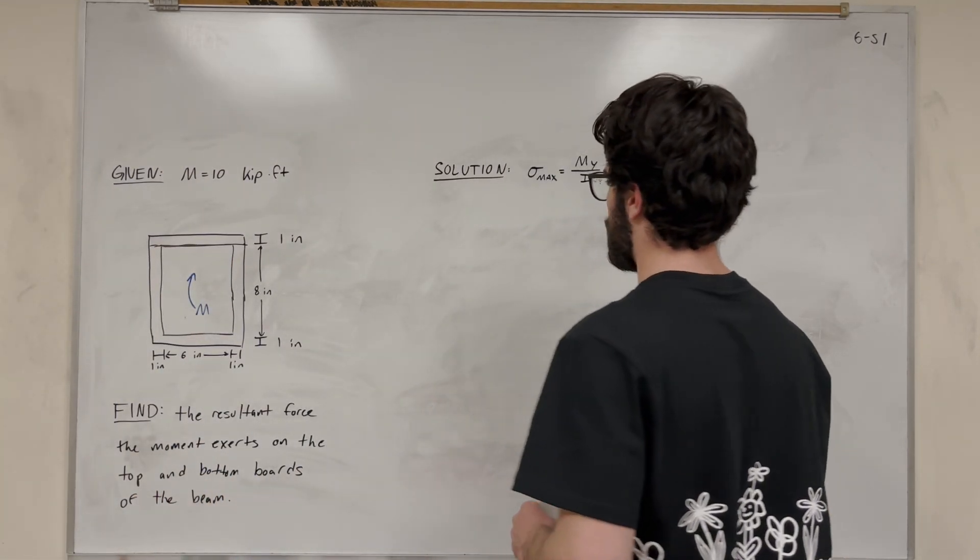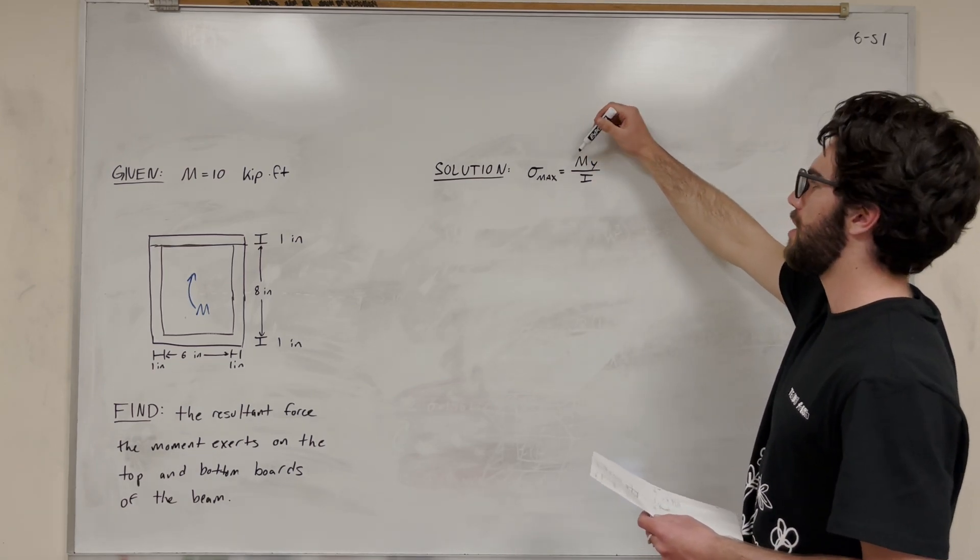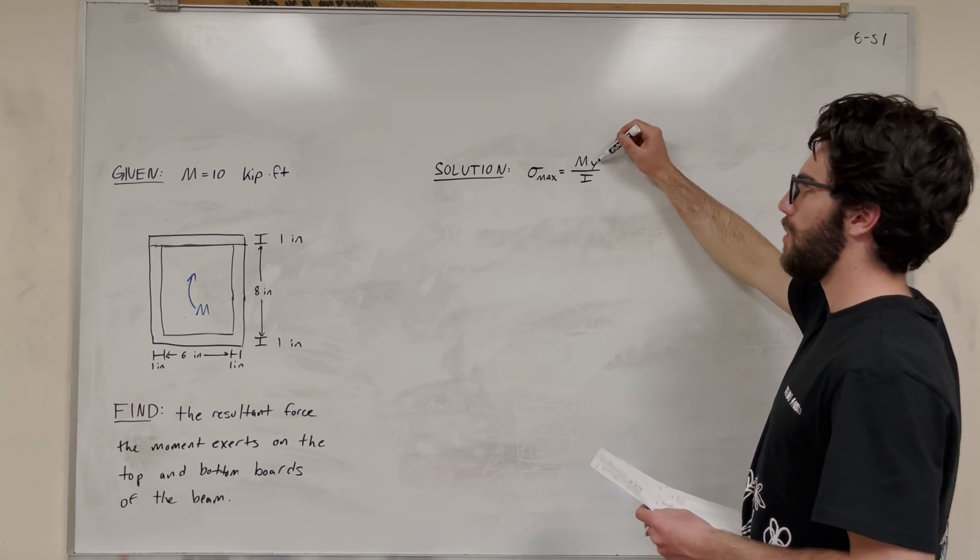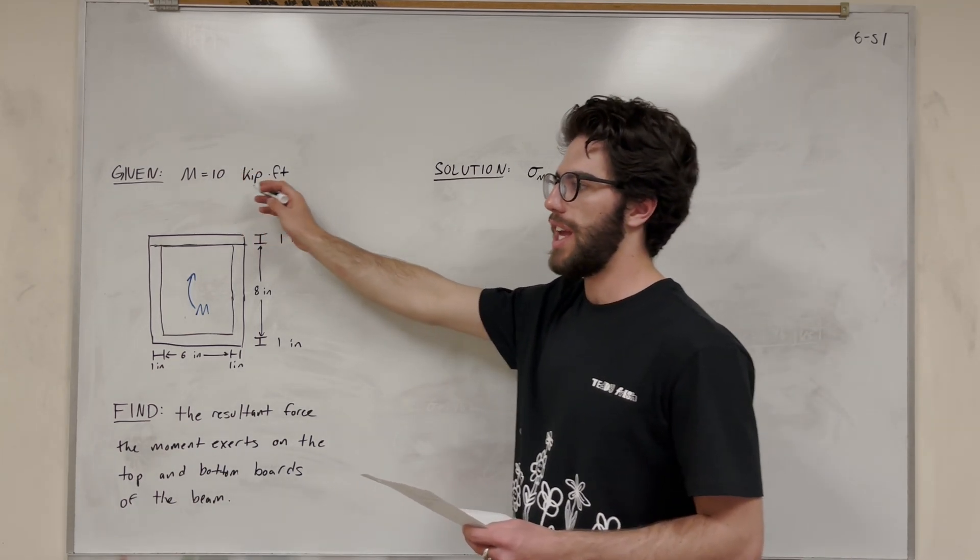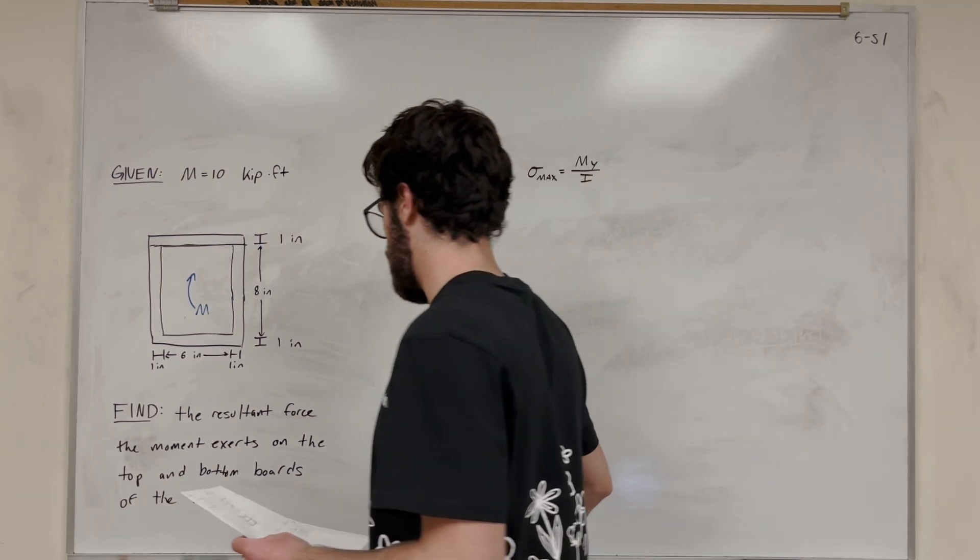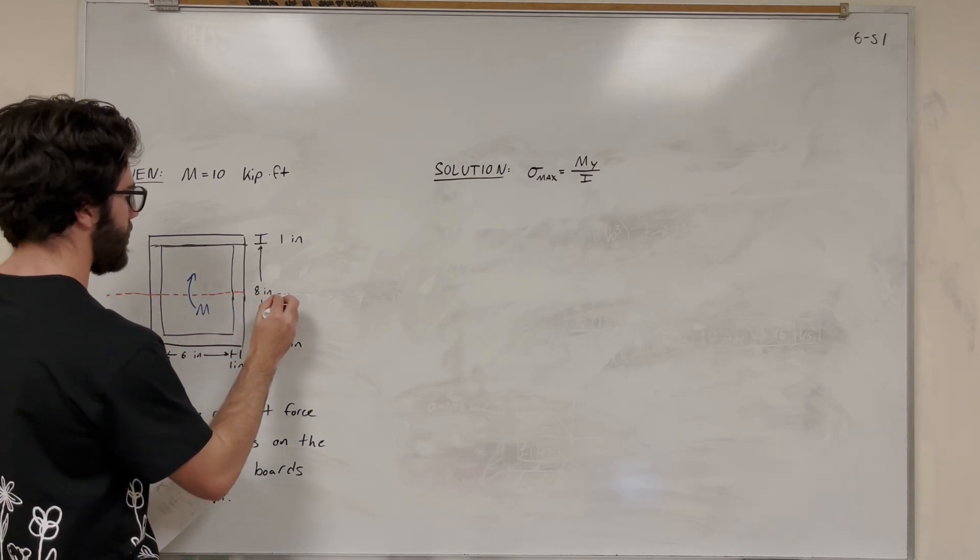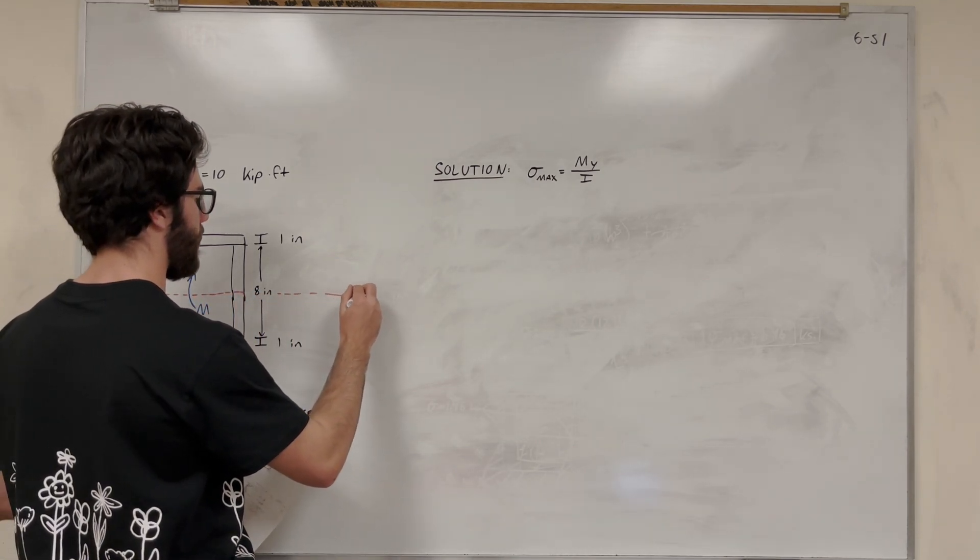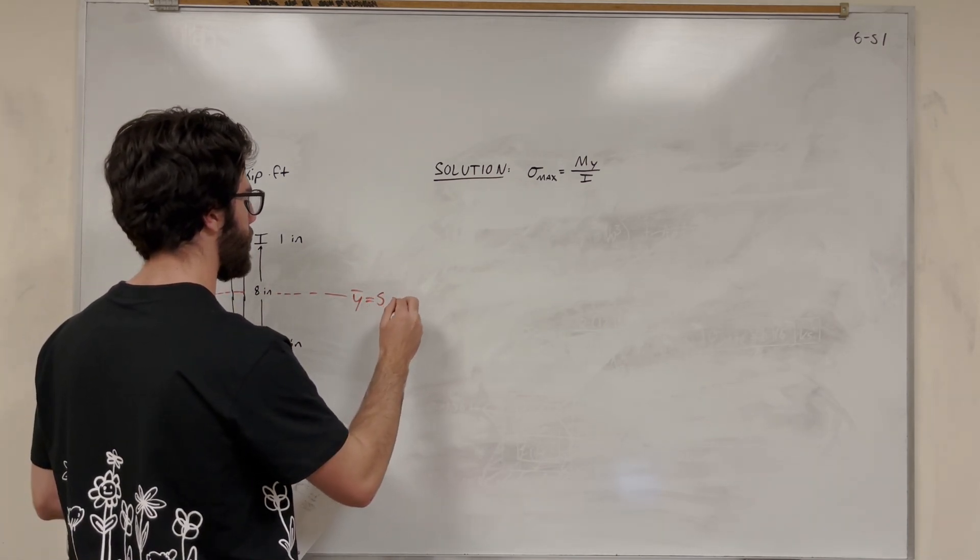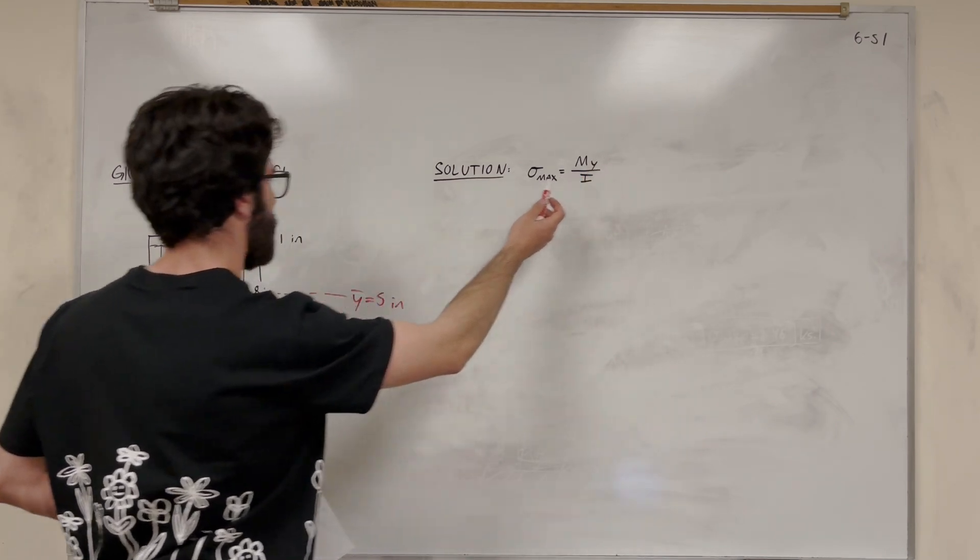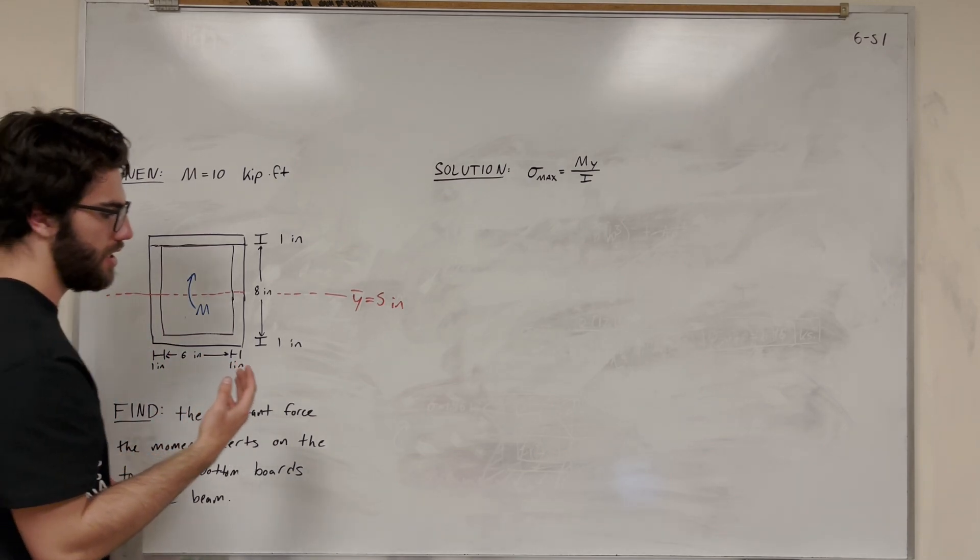If you want to find that force, we need to first find bending stress using this equation. Bending stress equals moment times distance in the y direction over moment of inertia. We know that moment is 10 kip feet. y is the distance from the center of mass. Because the shape is symmetrical, we know the center of mass is halfway to the top. If it's 10 inches tall, then y bar equals 5 inches. The maximum bending stress is located at the top or at the bottom where it is the most distance away.